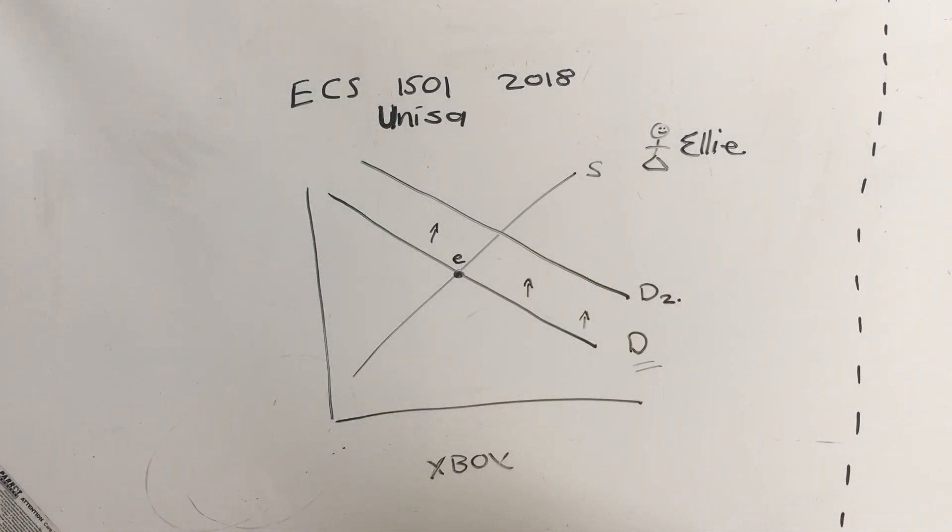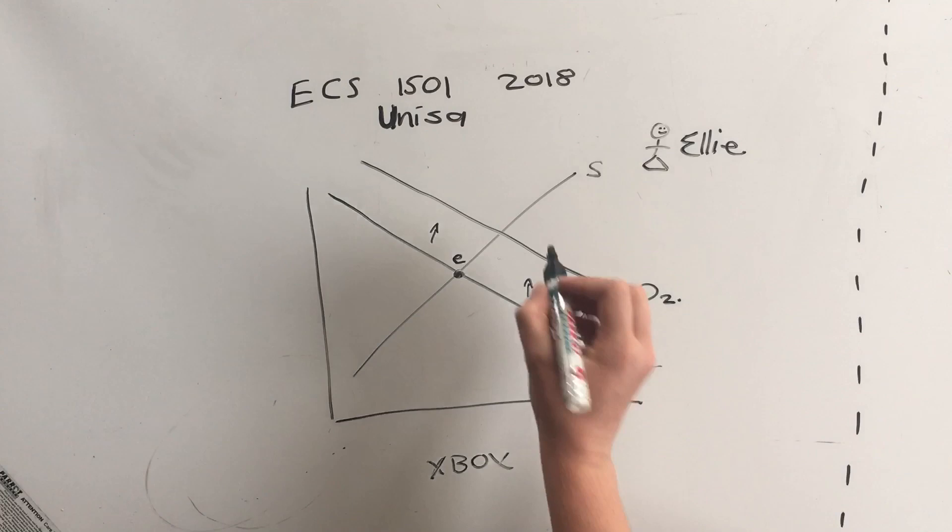Now let's say that with the Rand-Dollar people can buy new slimline Xboxes and they're very excited about it, so there are more people selling their old Xbox. For whatever reason it's not just one person extra, it is a change in the market conditions which is the exchange rate which has caused an increase in supply.